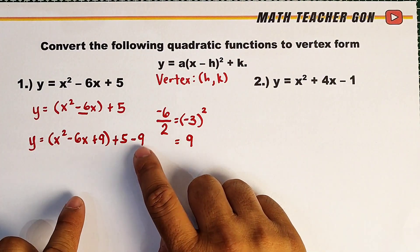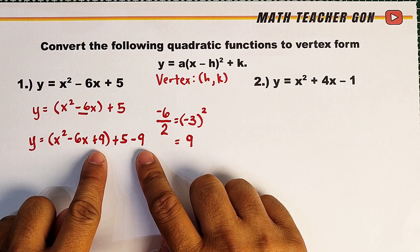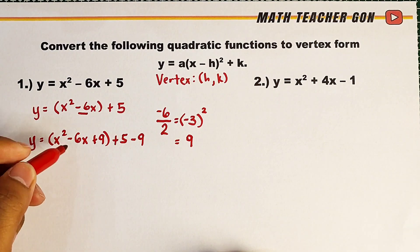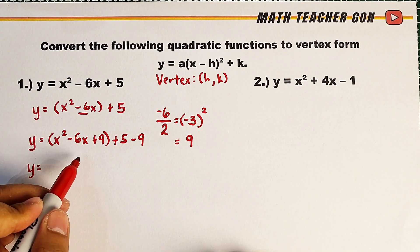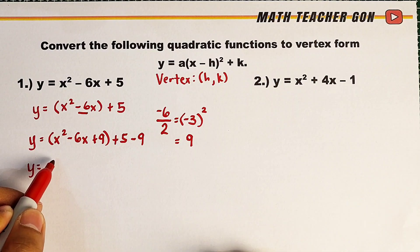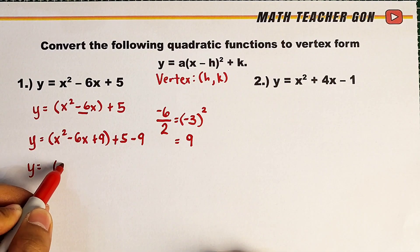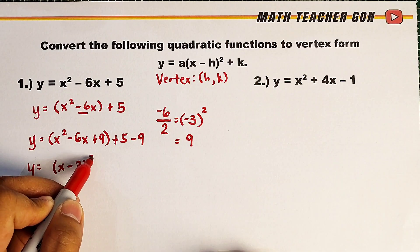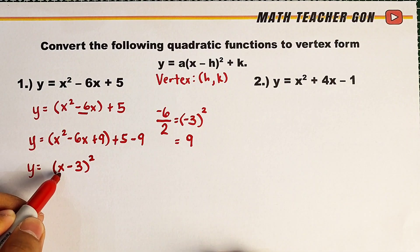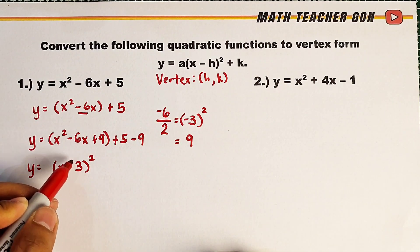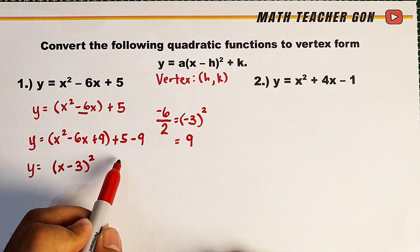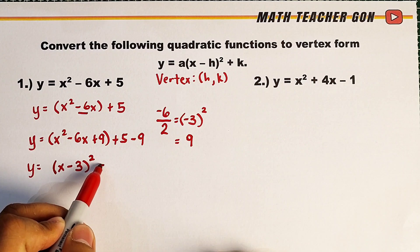The purpose of subtracting 9 is to make the net addition zero. Since this is already a perfect square trinomial, we need to express it as a square of a binomial. It is just x minus 3 raised to the second power. We get this by taking the square root of x squared, which is x, the square root of 9, which is 3, then copying the sign of the middle term, which is minus, and squaring. Lastly, 5 minus 9 equals negative 4.